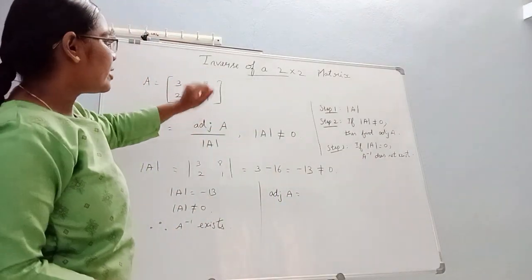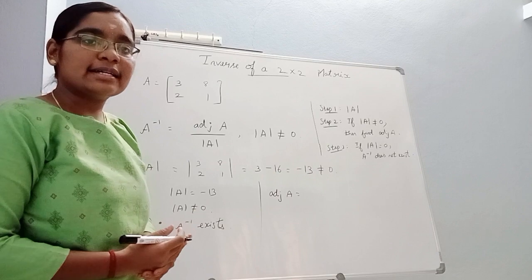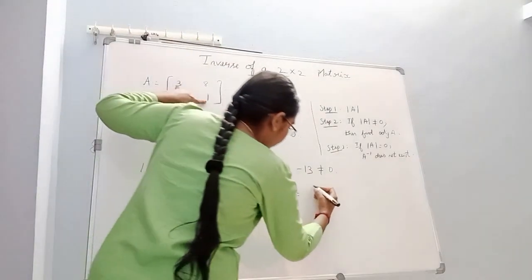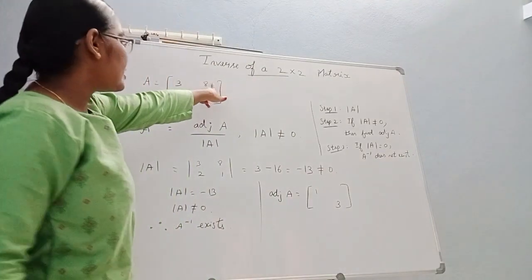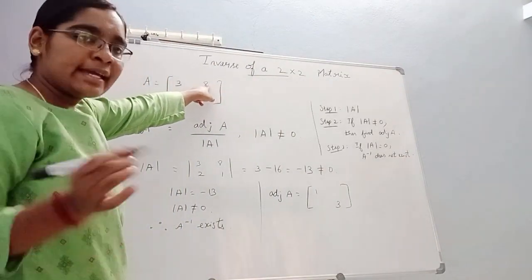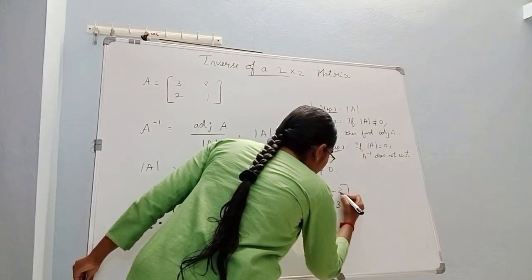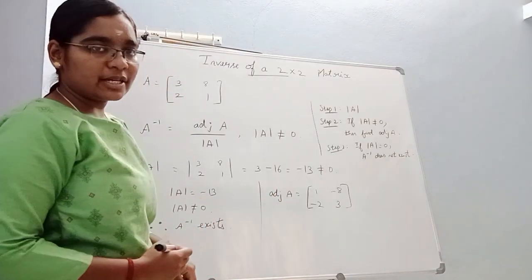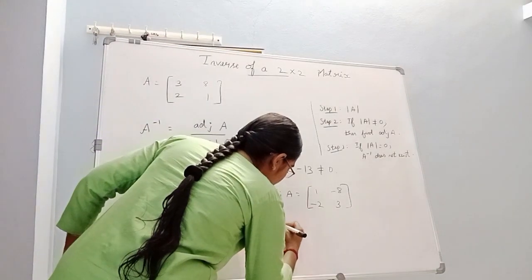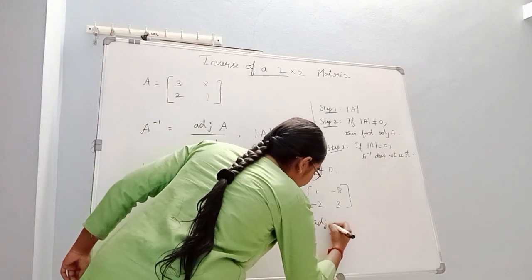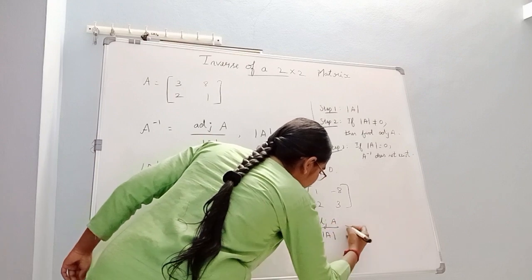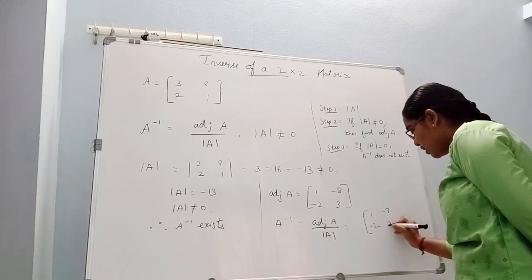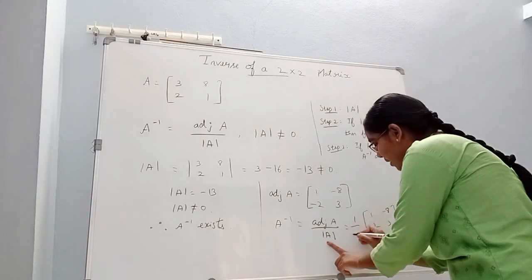This is a 2x2 square matrix. For a 2x2 matrix, how do we find the adjoint? A inverse equals adjoint of A divided by determinant of A. The adjoint of A is [1, -2; -8, 3], and the determinant of A is minus 13.